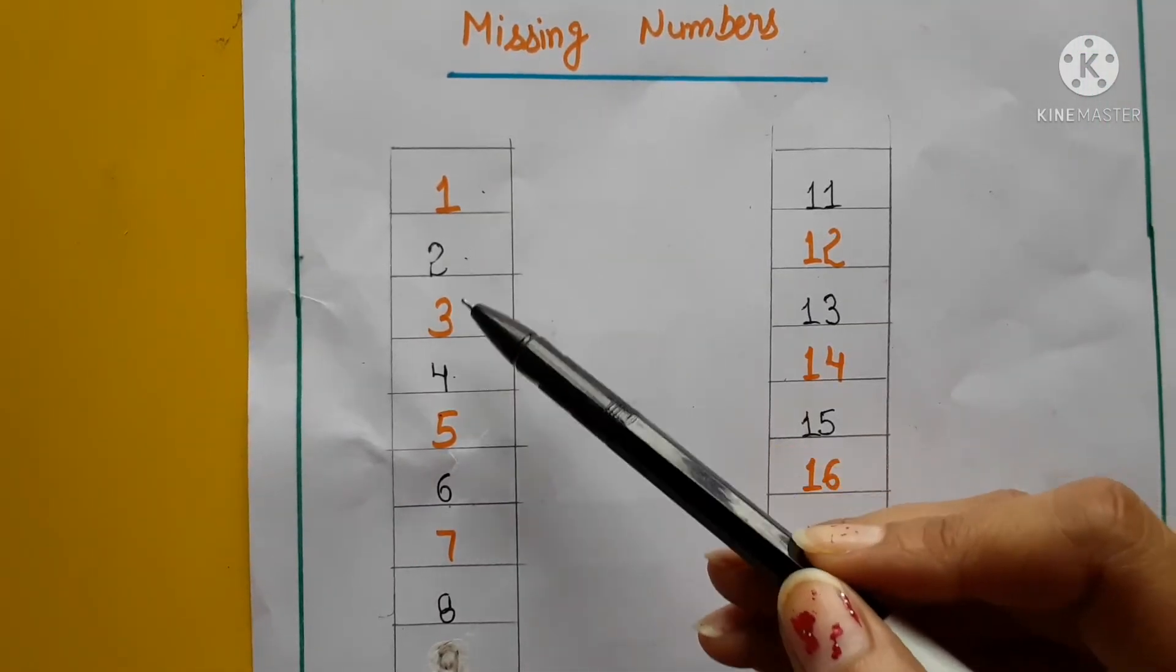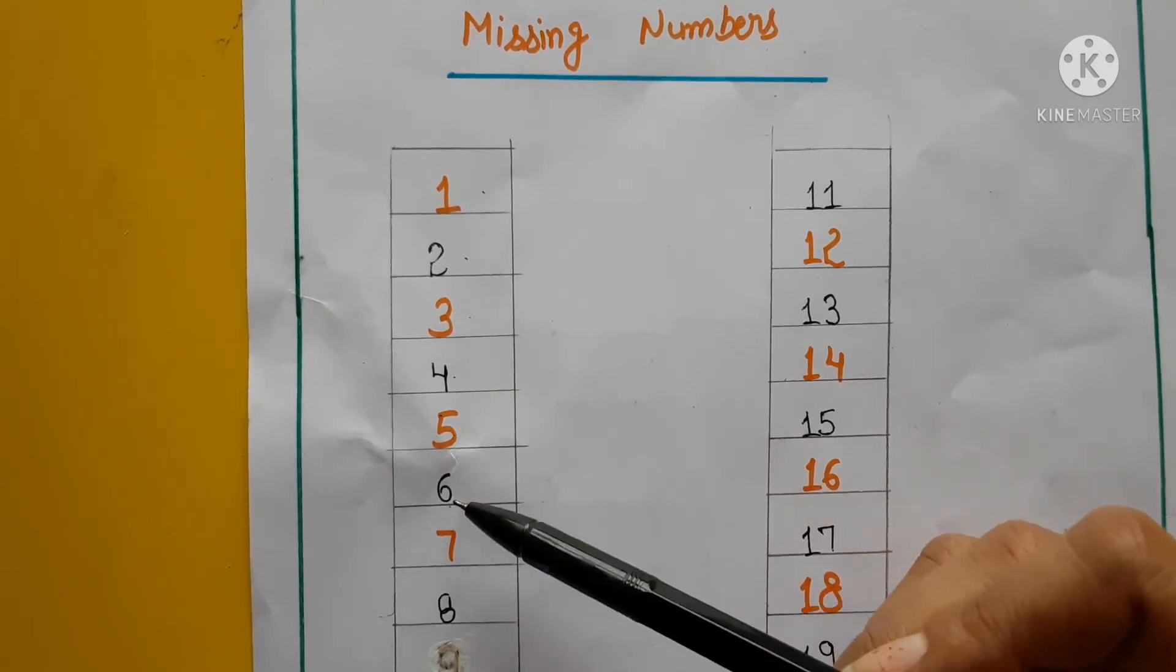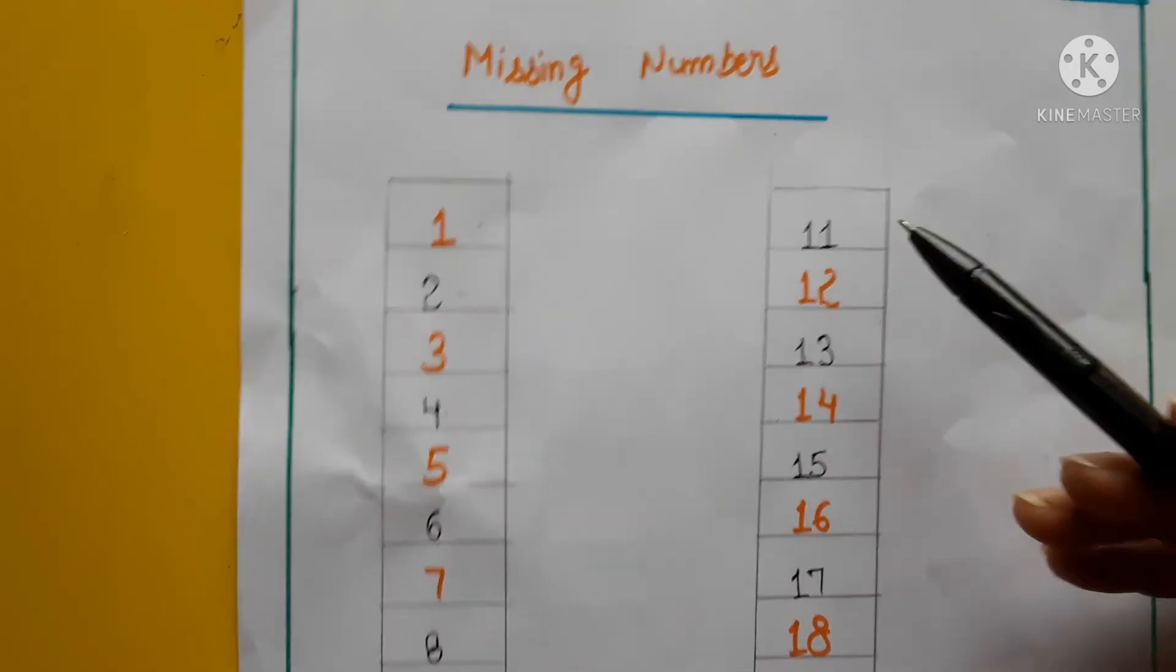1, 2, 3, 4, 5, 6, 7, 8, 9, 10. Uske baad kya aayega?